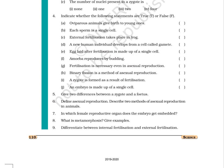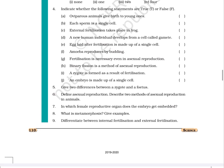Question 5: Give two differences between a zygote and a fetus. Question 6: Define asexual reproduction. Describe two methods of asexual reproduction in animals. Question 7: In which female reproductive organ does the embryo get embedded? Question 8: What is metamorphosis? Give examples. Question 9: Differentiate between internal fertilization and external fertilization.